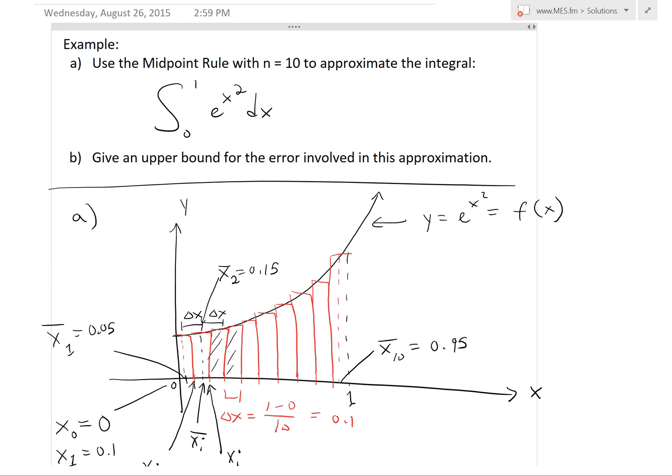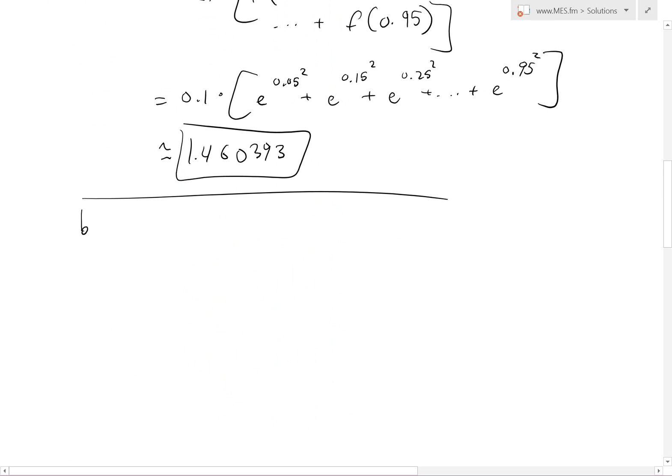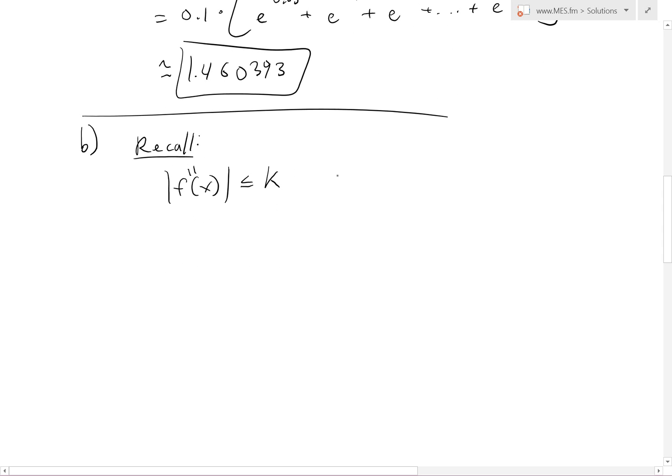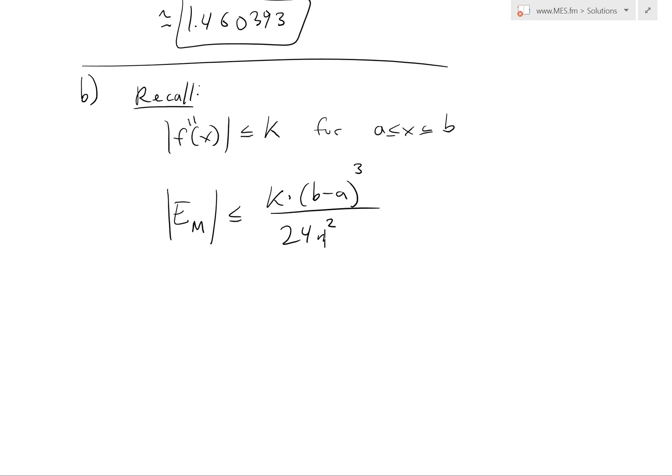And now to do part B, which says give an upper bound for the error involved in this approximation. So recall from my earlier video on the error bounds. Recall, basically the error bound for the midpoint rule is if you have a number such that the absolute value of the second derivative of f of x is less than or equal to k, or k is greater than or equal to the second derivative of f of x for the interval, for x is less than or equal to b, greater than or equal to a. And again, the formula was Em, the error midpoint rule, absolute value less than or equal to k times b minus a cubed over 24 n squared.